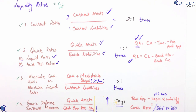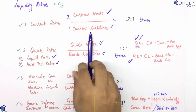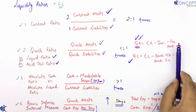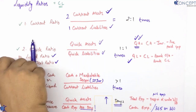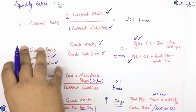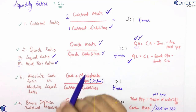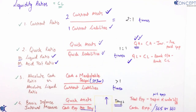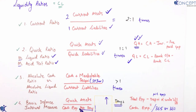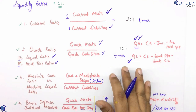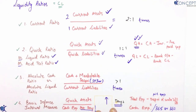Toh ye chaar main liquidity formulas hain — current ratio, quick ratio, absolute cash ratio, aur basic defense interval measure. In charon ke related kuch sums karenge taaki understanding aur increase ho. In the next video, we are going to take up current ratio sums.